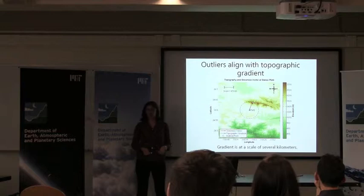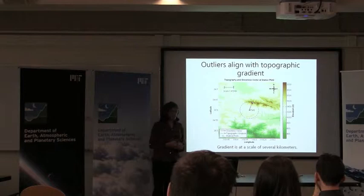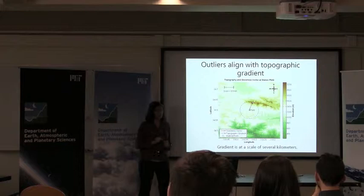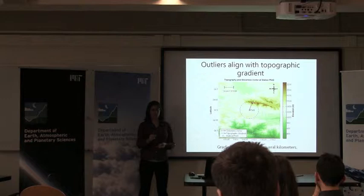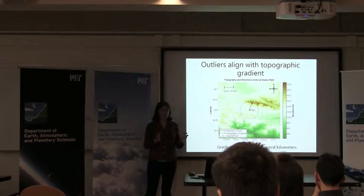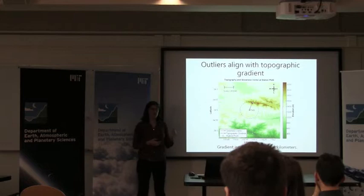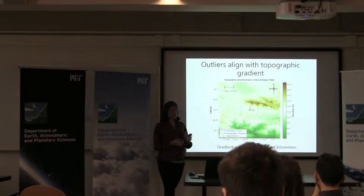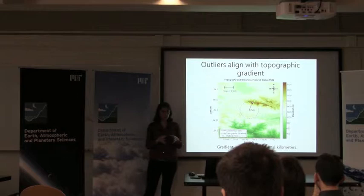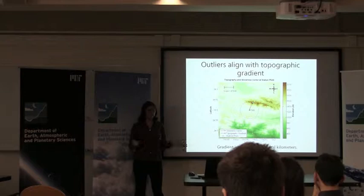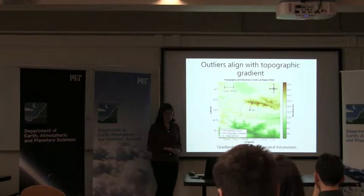As I began to study this problem across the network, one of the first things I noticed is that the direction where the outliers are more likely is not a random direction. At P549 in Southern California, the outliers are mostly north and slightly to the east. I created a vector from these two quantities and plotted it on a topographic map surrounding the station. An interesting observation is that the direction in which the outliers are likely is related to the direction where the topography is high, especially at a scale of several kilometers — roughly three to five kilometers. Local-scale or very large-scale topography doesn't have much effect.